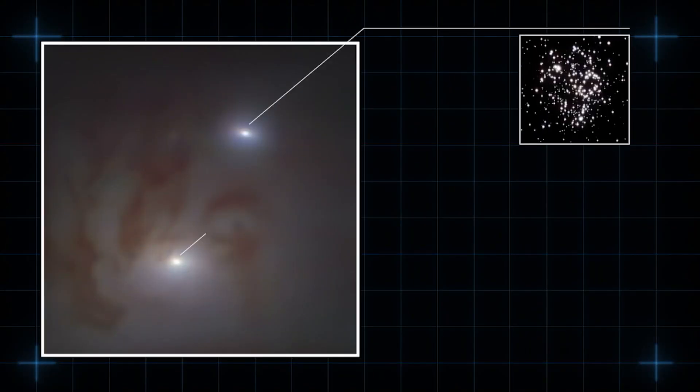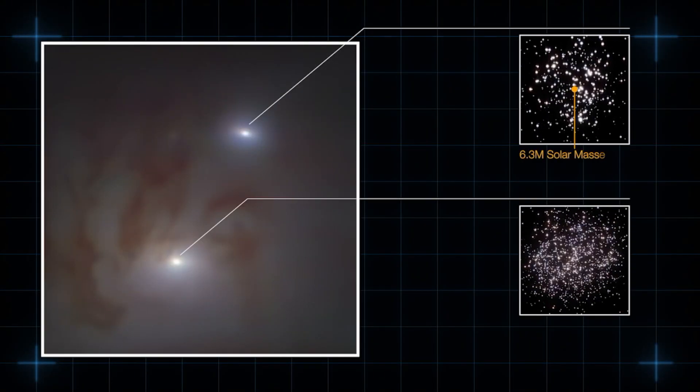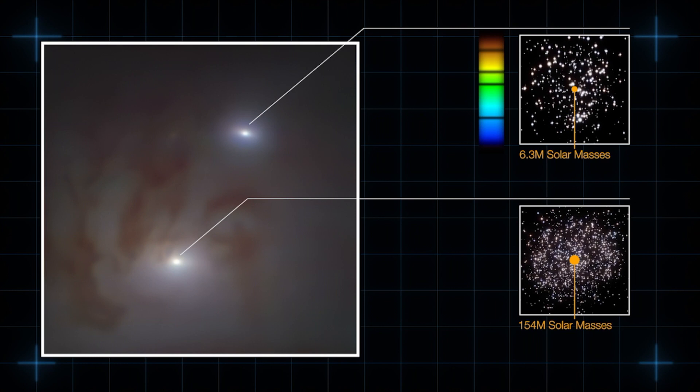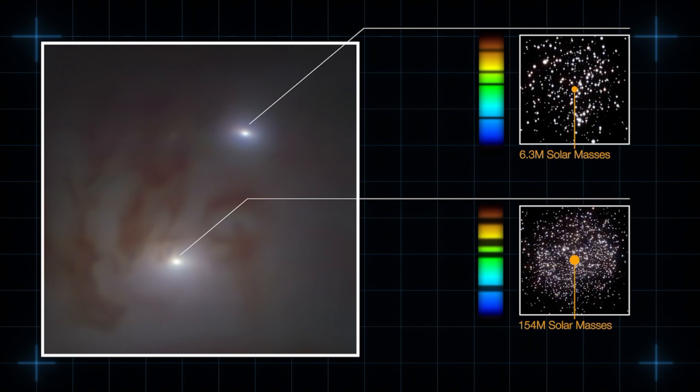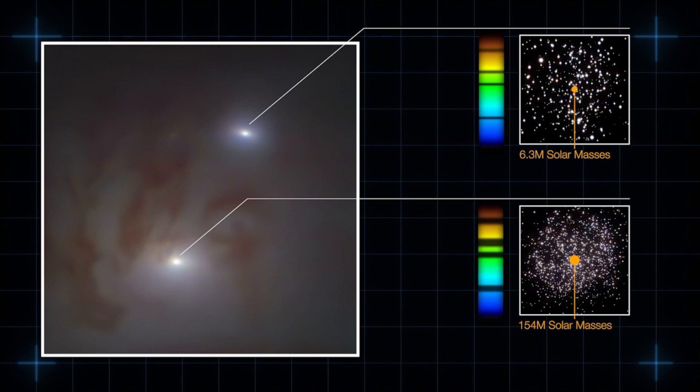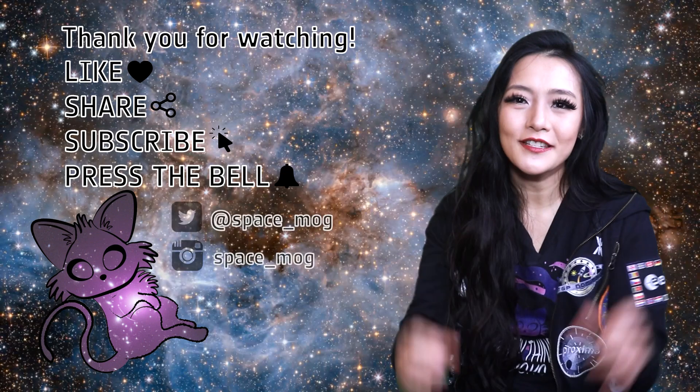For example, two galaxies may have the same oval shape but differ in the distribution of their stars, gas and dust, or they might have similar colours but differ in their spectral lines, which reveal information about their chemical composition and star forming history. And remember, when you do find two galaxies that appear identical, chances are it's an illusion caused by gravitational lensing. That's all for this week's video — if you enjoyed it please don't forget to leave a like, share and subscribe.